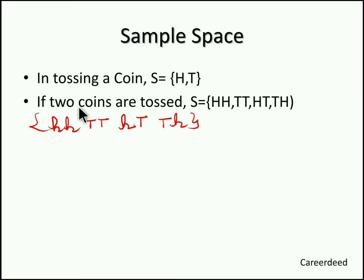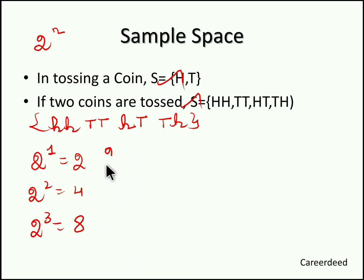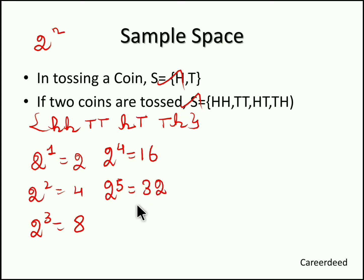If the total number of coins exceeds 2, we use the formula 2 power n. Tossing 1 coin gives 2 power 1, which is 2. Tossing 2 coins gives 2 power 2, which is 4. Tossing 3 coins gives 2 power 3, which is 8. Tossing 4 coins gives 2 power 4, which is 16. Tossing 5 coins gives 2 power 5, which is 32. You can easily calculate the sample space using 2 power n.